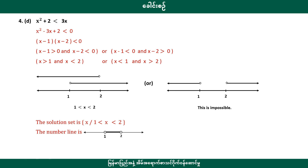X squared plus 2 less than 3 is equal to a plus 2. Then x squared minus 3a plus 2 is less than 0. Then we can see that equation.